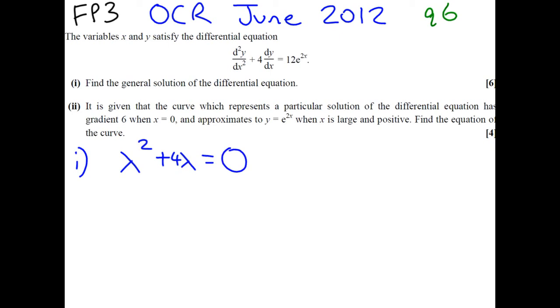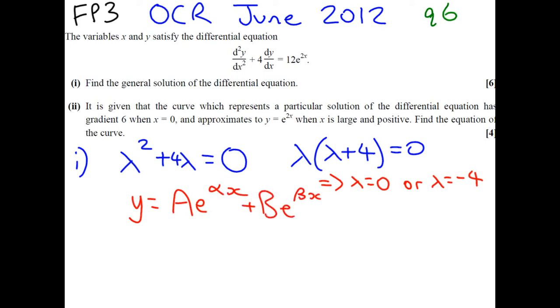So, this is set equal to 0, and we can factorise λ, λ plus 4 equals 0. So, we get the two solutions that λ equals 0 or λ equals minus 4. Now, if you remember, we use the formula that y equals Ae to the αx plus Be to the βx, where α and β are our two solutions.